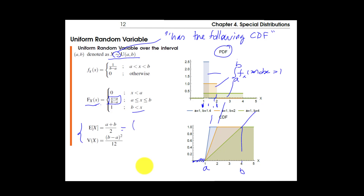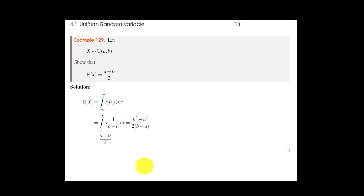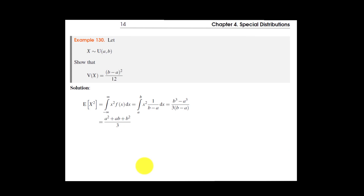The expected value and variance are computed with the standard formulas. The expected value is (a+b)/2 — right in the middle of the range. For the green distribution going from a=1 to b=4, the center of gravity is at 2.5. As an exercise, make sure you can derive these results, especially for the variance.